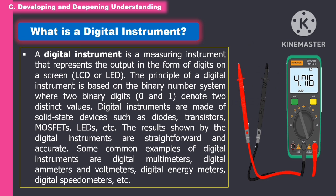What is a digital instrument? A digital instrument is a measuring instrument that represents the output in the form of digits on a screen, such as LCD or LED. The principle is based on the binary number system, where two binary digits — 0 and 1 — denote distinct values. Digital instruments are made up of solid-state devices such as diodes, transistors, MOSFETs, and LEDs. The results shown by digital instruments are straightforward and accurate. Some common examples include digital multimeters, digital ammeters and voltmeters, digital energy meters, digital speedometers, and more.